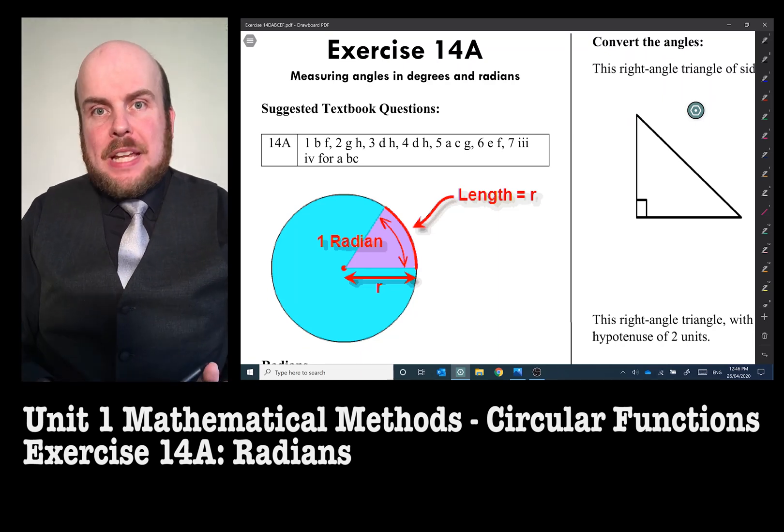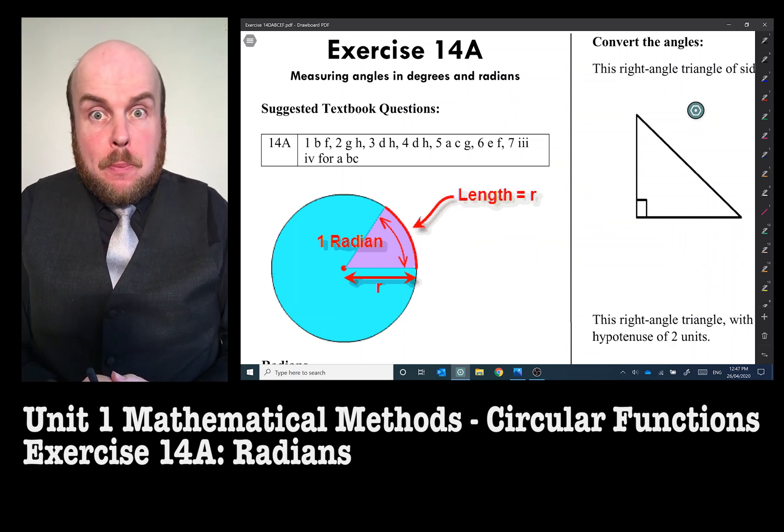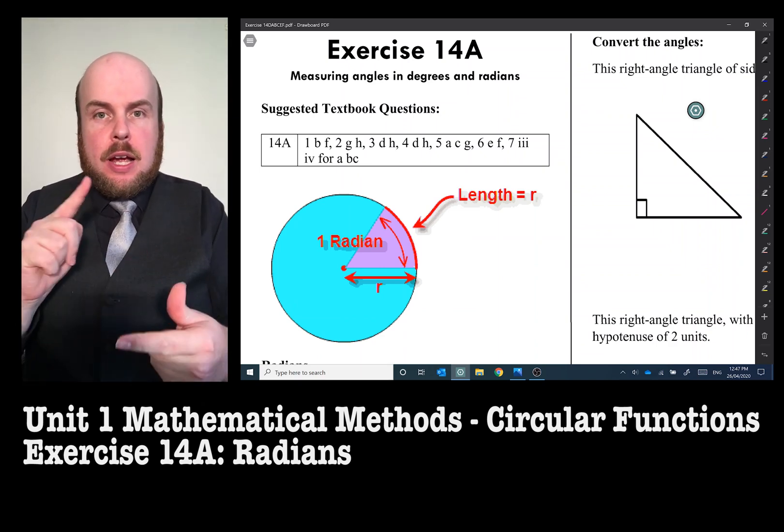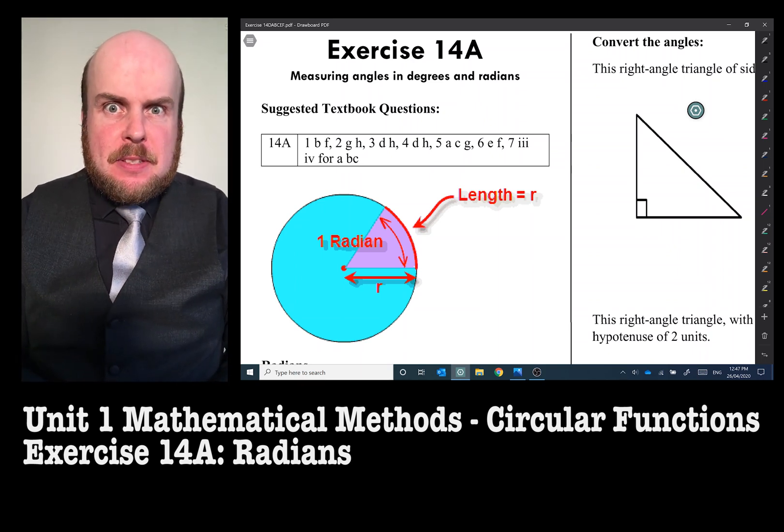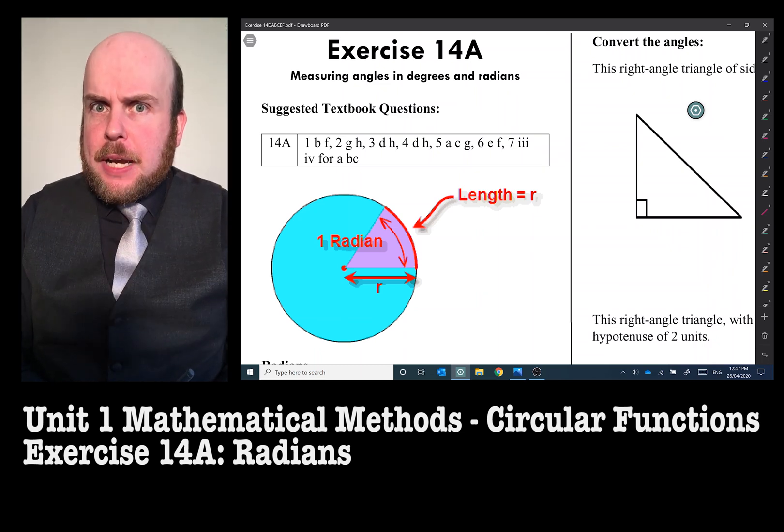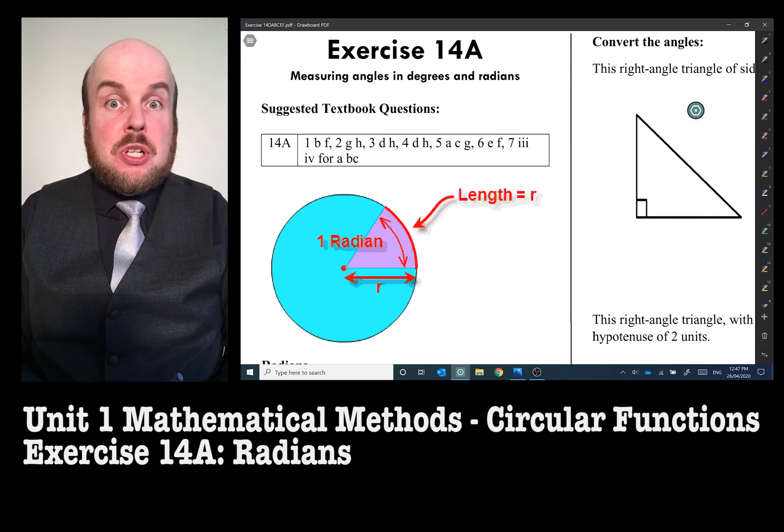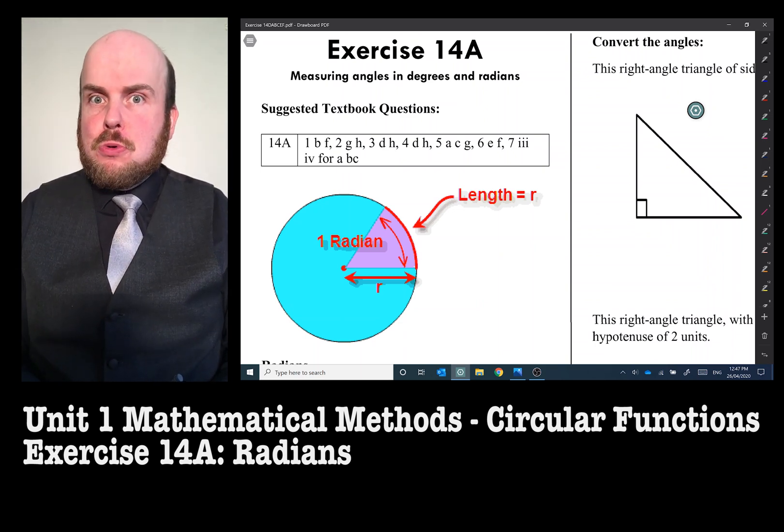Measuring angles in both degrees and radians. When we're doing trigonometry, we have learned sine, cosine, tan, and we've had a good revision about that. But now we're going to introduce you to a new form of measuring angles. From this point on we tend to not use degrees very much. We tend to use a measure called a radian.